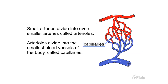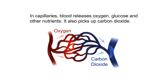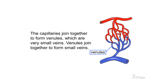Small arteries divide into even smaller arteries called arterioles. Arterioles divide into the smallest blood vessels of the body, called capillaries. In capillaries, blood releases oxygen, glucose, and other nutrients, and picks up carbon dioxide. The capillaries join together to form venules, which are very small veins. Venules join together to form small veins.